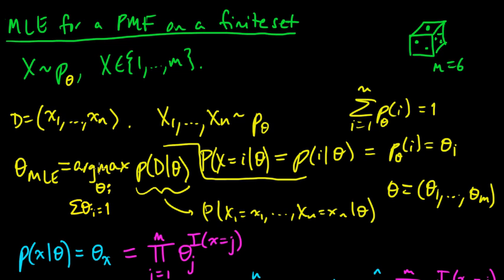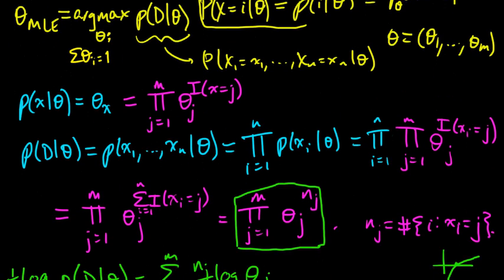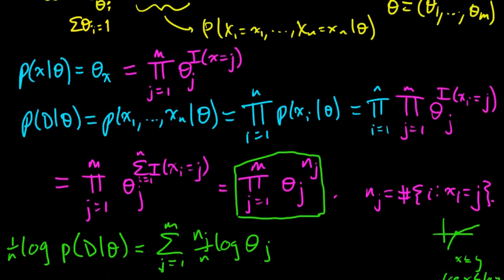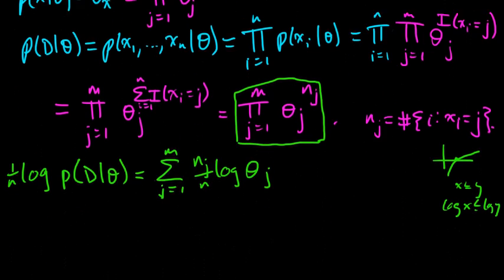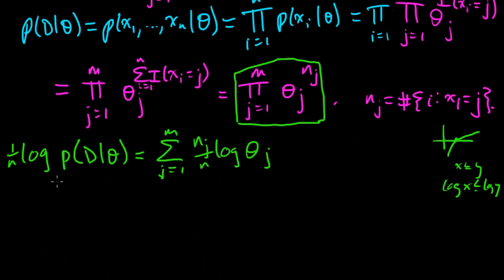It's the arg max, it's this constrained maximization problem. We're maximizing over these thetas, maximizing this expression. And we did some calculations and figured out that maximizing that thing, so the arg max of the original expression which is theta MLE, is also the arg max of this expression here.